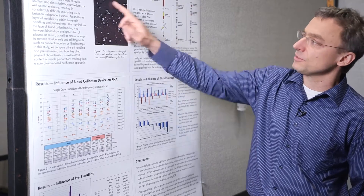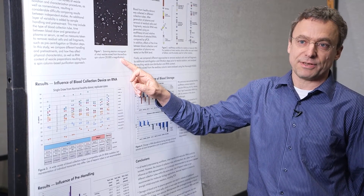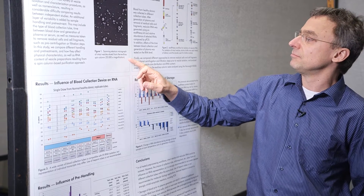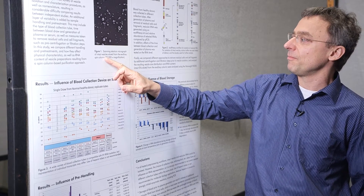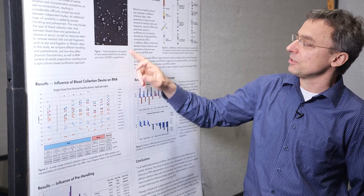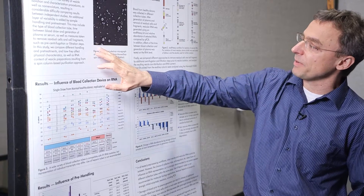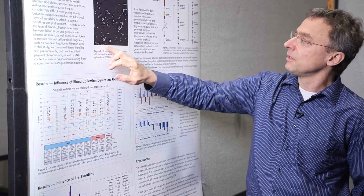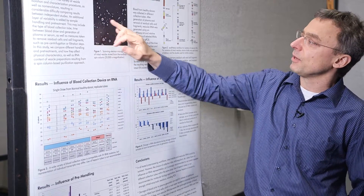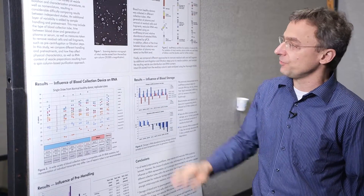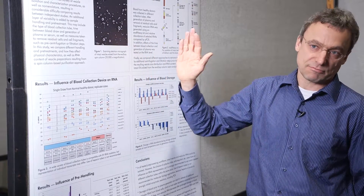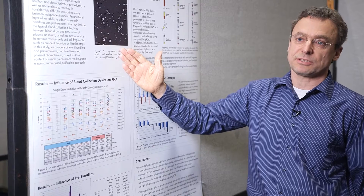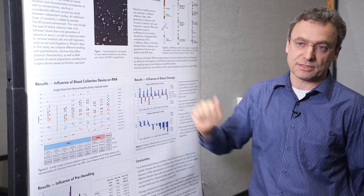This is what the vesicles basically look like on scanning electron micrographs. You can see it's pretty much the expected size range — about 200 nanometers — with some smaller or a bit larger. So we get all kinds of vesicles, not just exosomes but also larger vesicles.